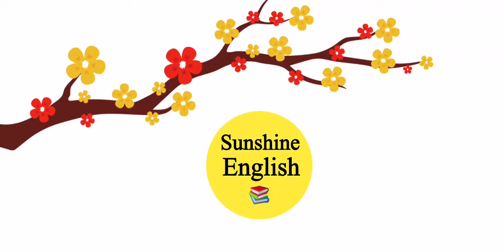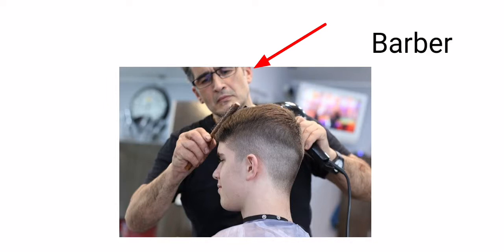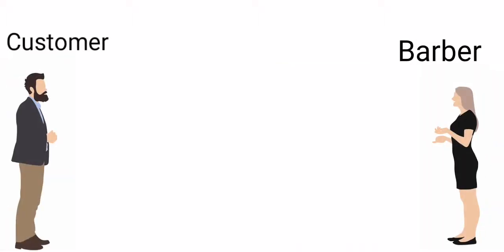Welcome to Sunshine English! In this video, you will learn how to get a haircut in English. If you want to get your haircut, you need to go to the salon. This person is called a barber — a barber who cuts your hair. You will also learn vocabulary with pictures. Let's get started!